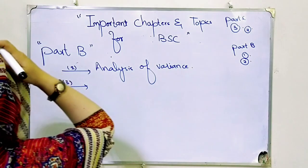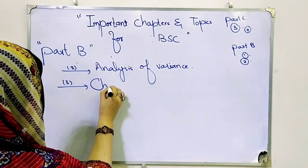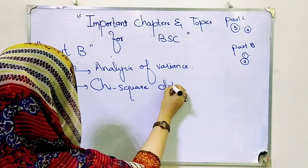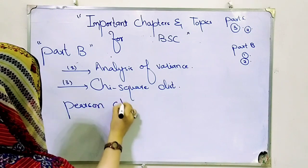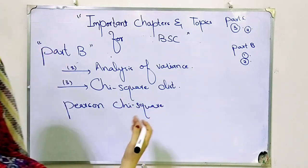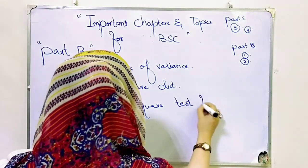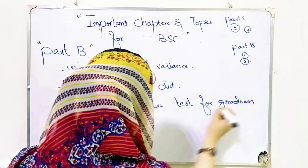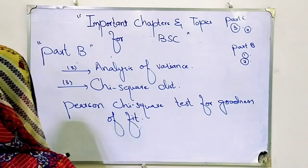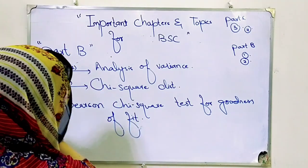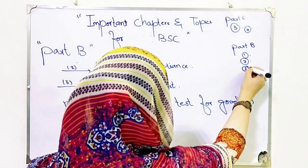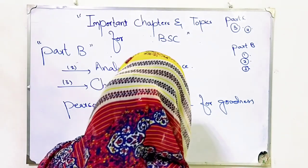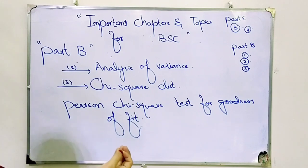You should also keep one choice ready — if no question from above suits you, Chi-Square distribution is also important to prepare. The important topic is the Pearson Chi-Square test for goodness of fit — using binomial distribution, Poisson distribution, and normal distribution. This topic is most important. You have five to six chapters prepared, covering the total ten questions — five questions already covered.